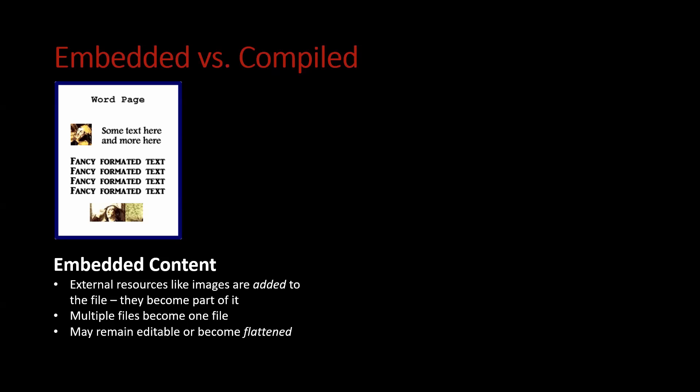If you put an image in a Word page and then you resize it, Word actually saves an original version of the file as well as a resized version. Same thing if you crop an image inside of Word — it keeps a cropped copy as well as the entire original file. So when you open that file back up in Word, you can manipulate those images, move them around, even recrop them in a different way. That's editable.